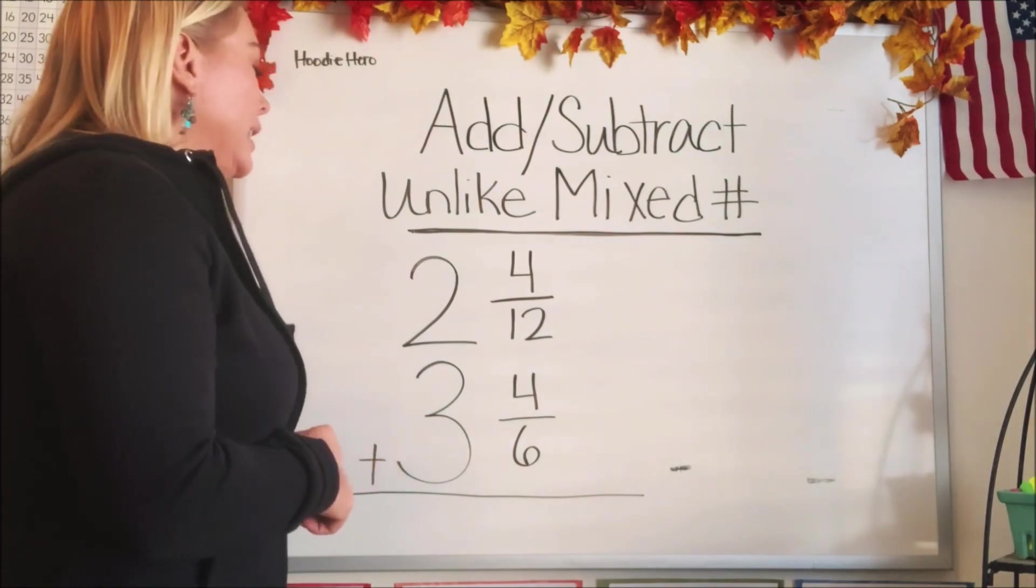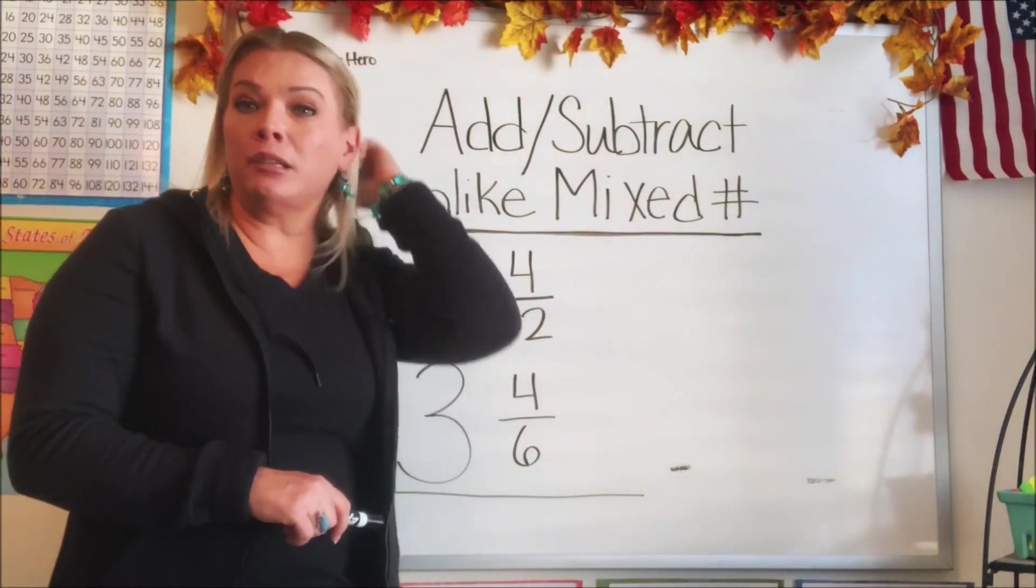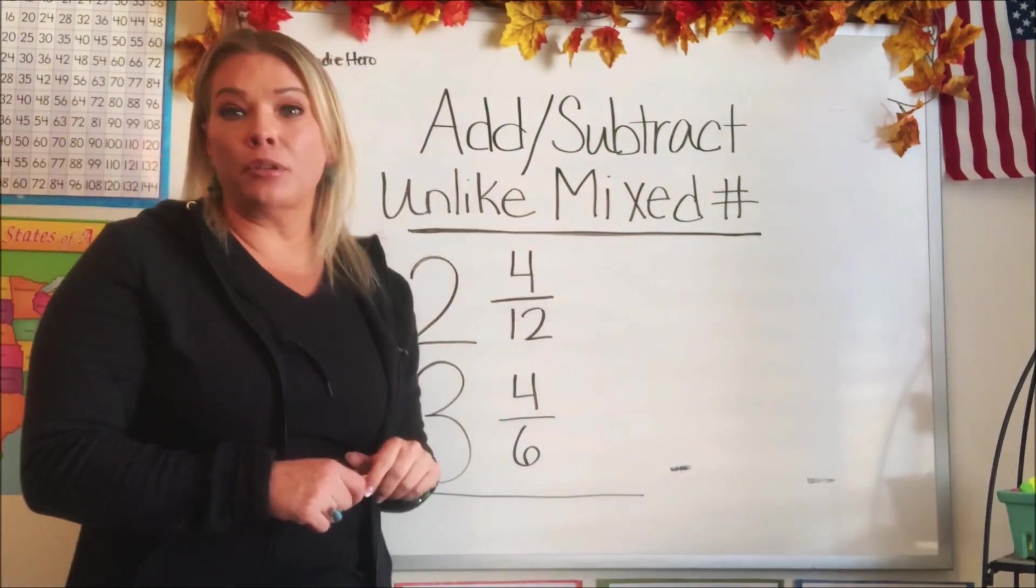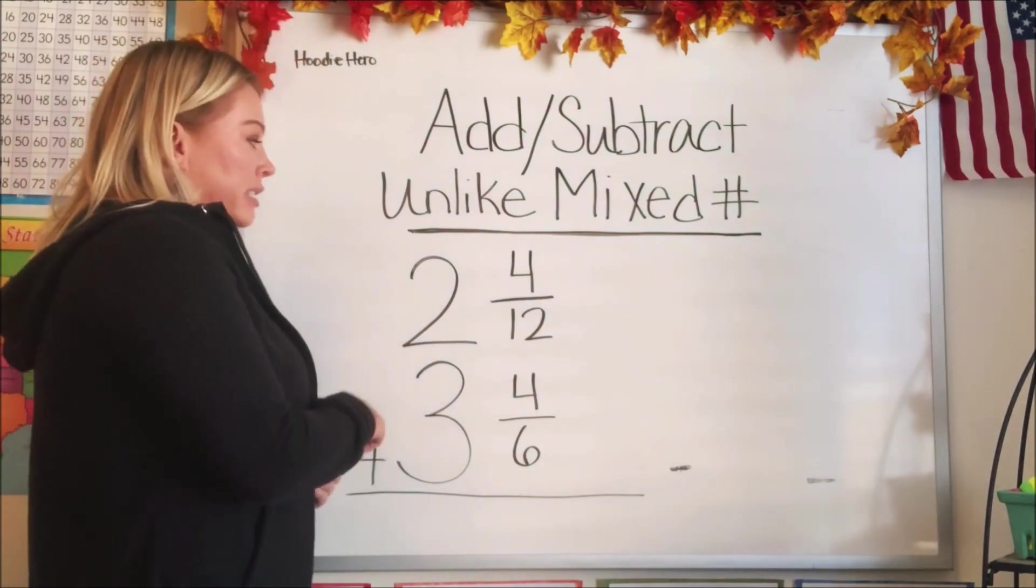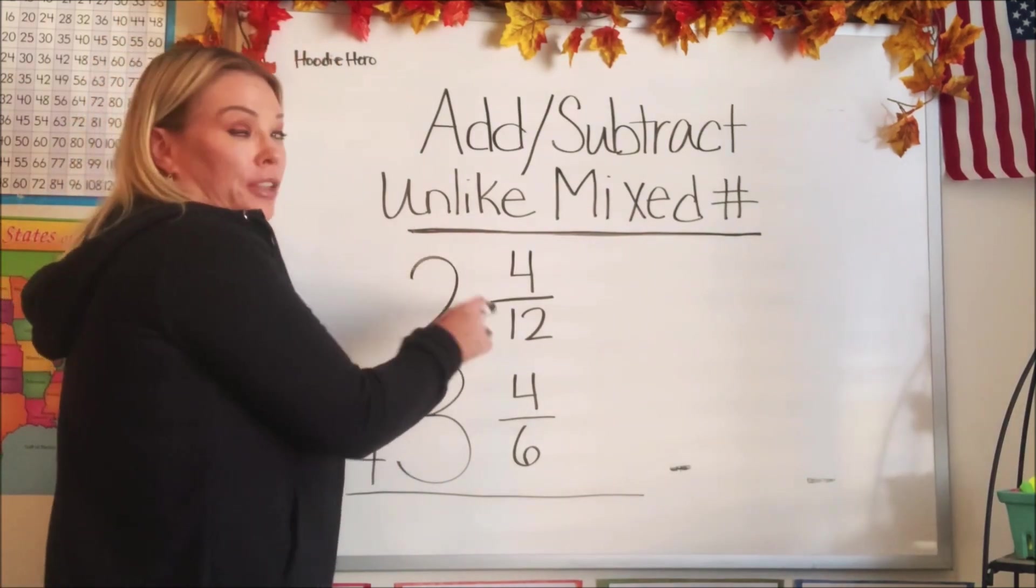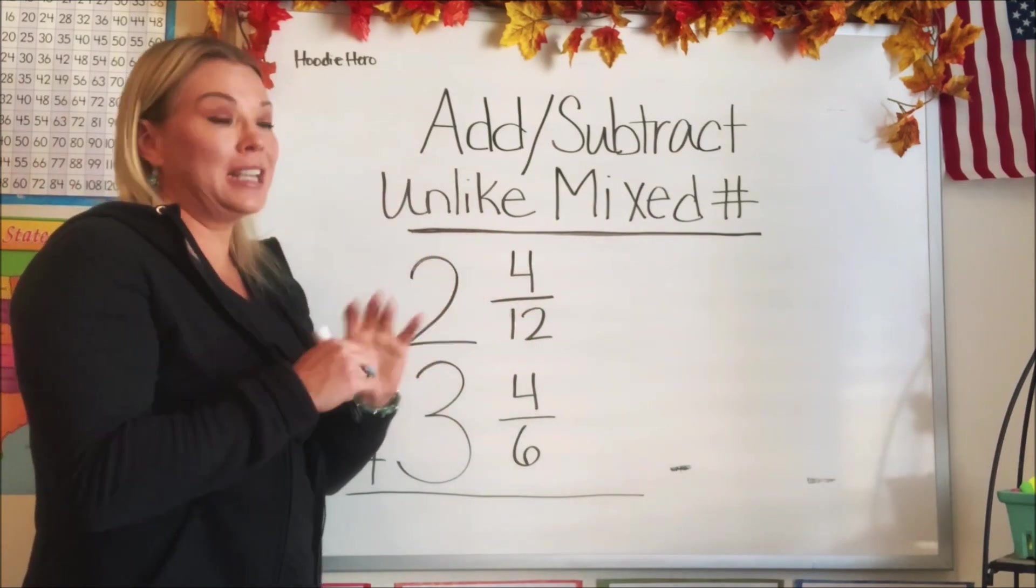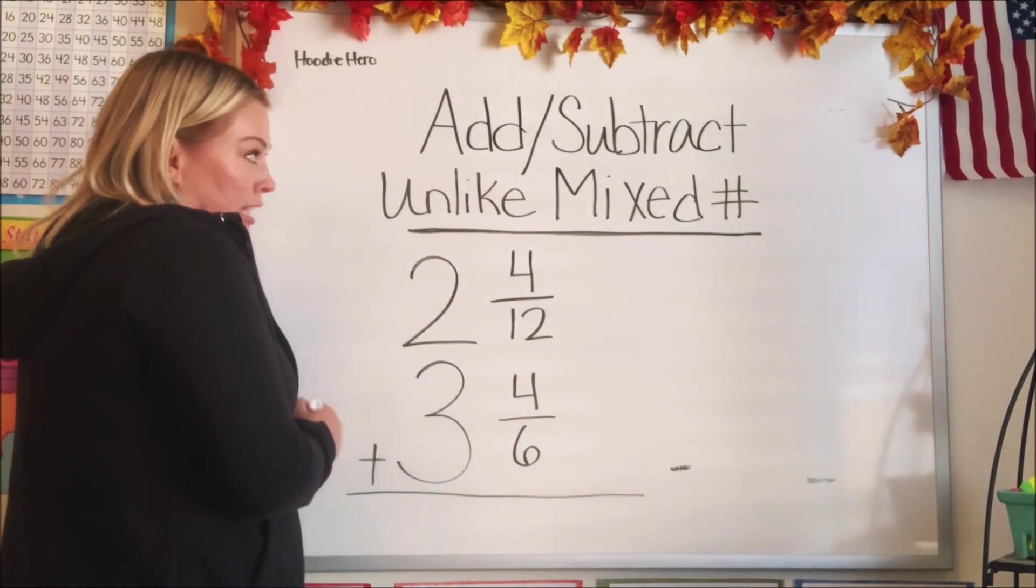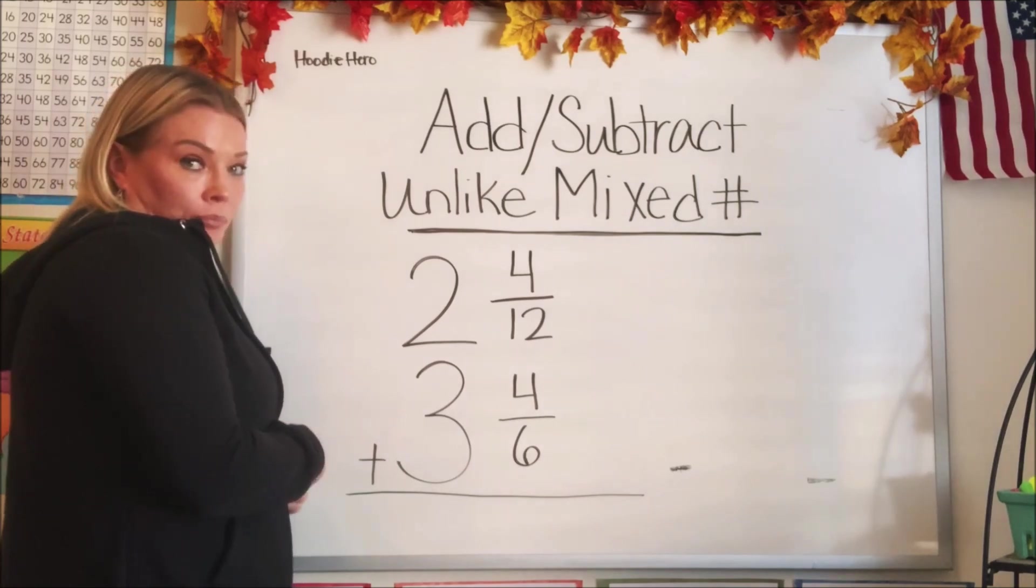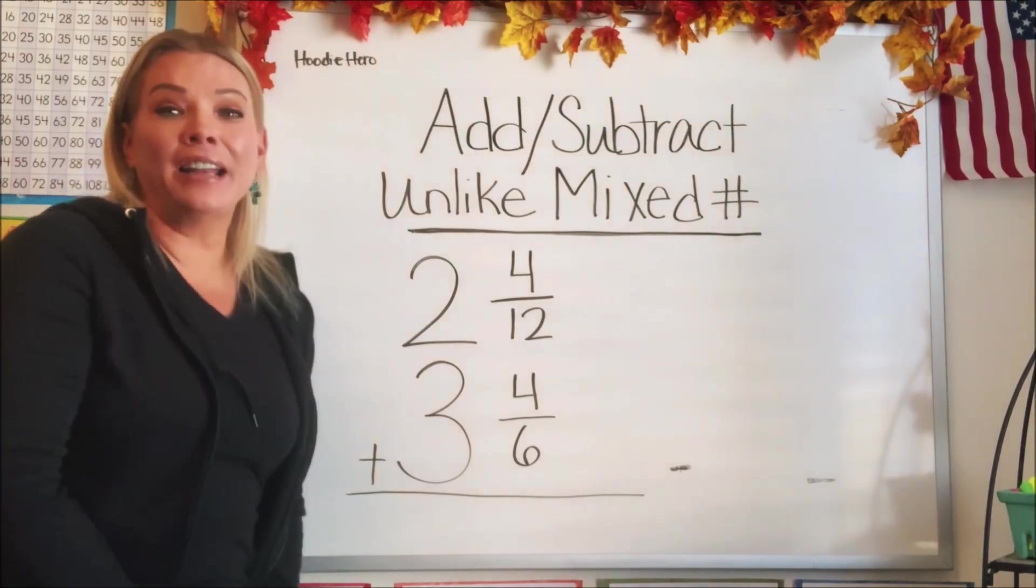In a previous video we talked about what unlike mixed numbers are. A mixed number, just to review, is a whole number with a fraction, two types of digits mixed together, and we're just adding or subtracting them. Let's get right into it.